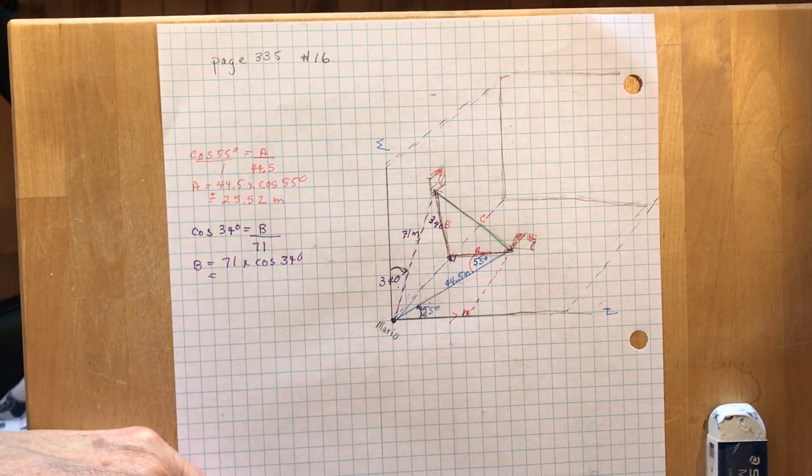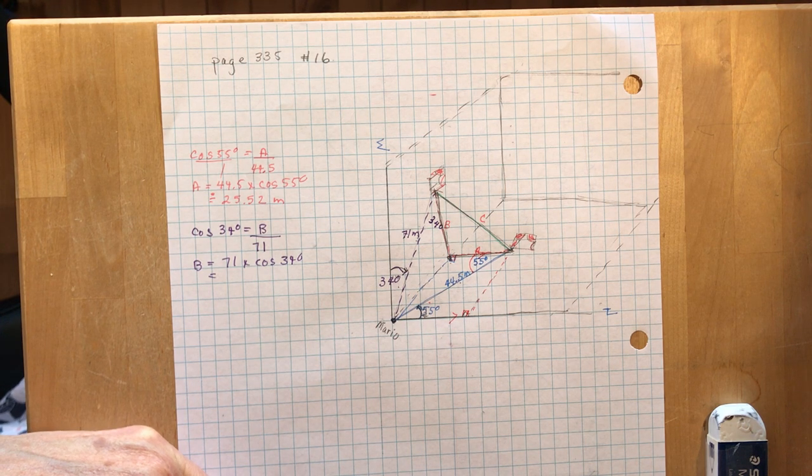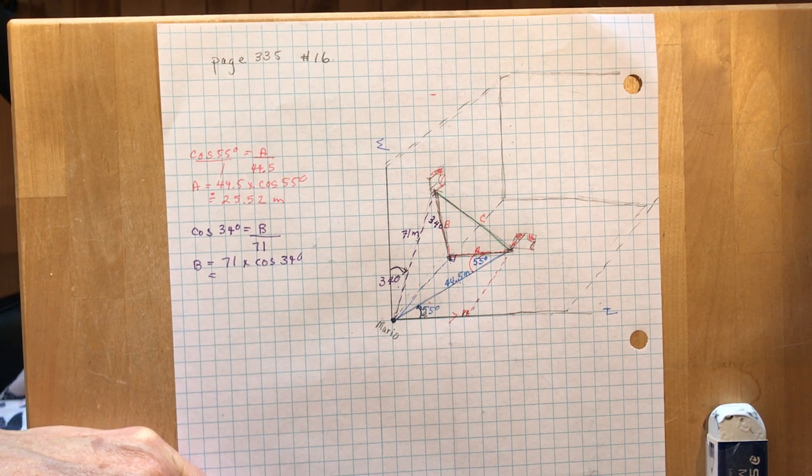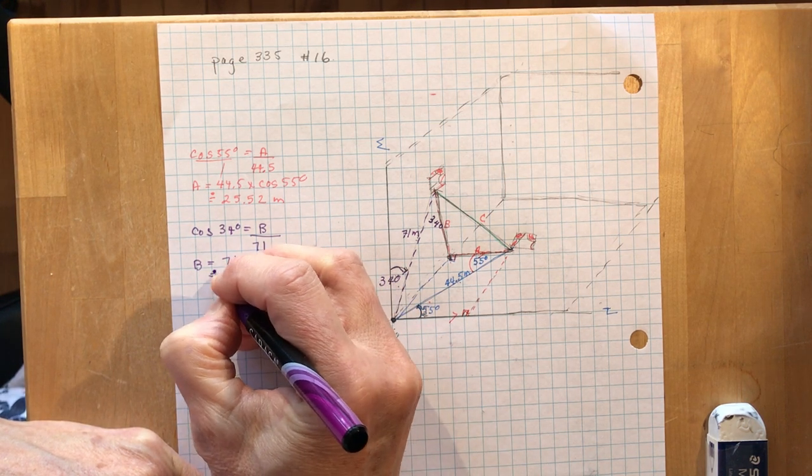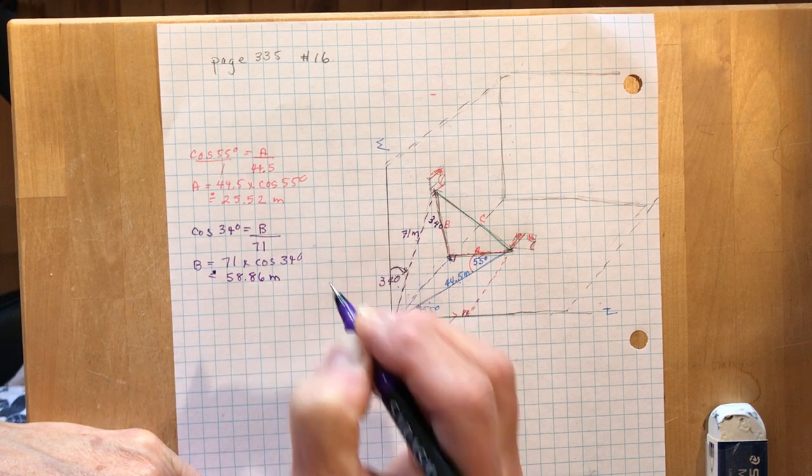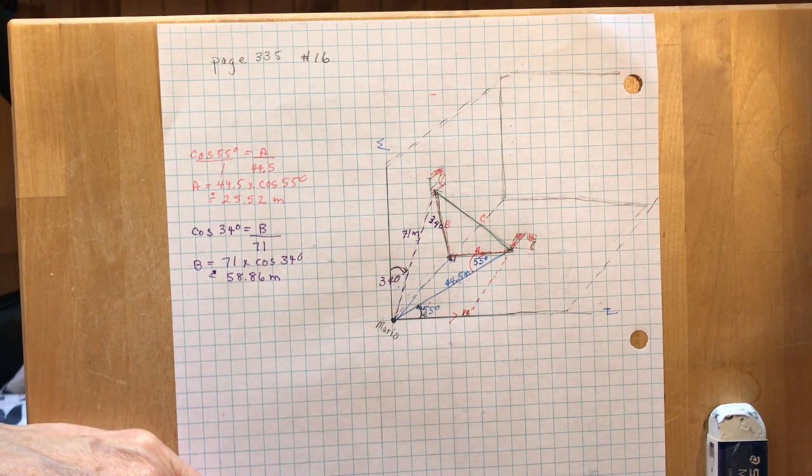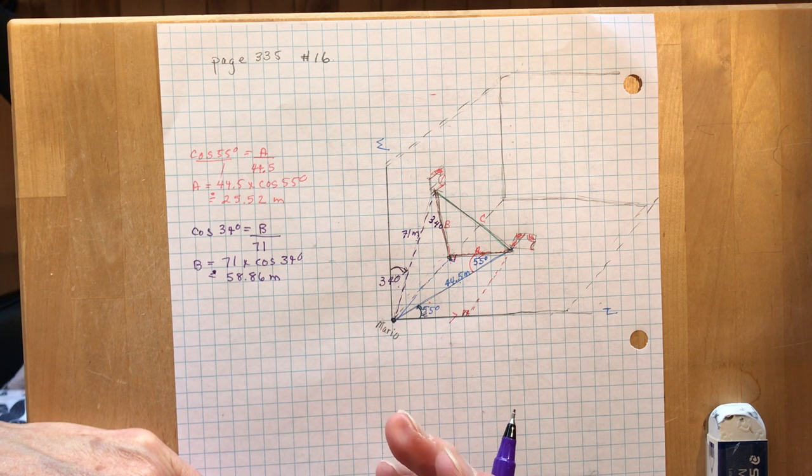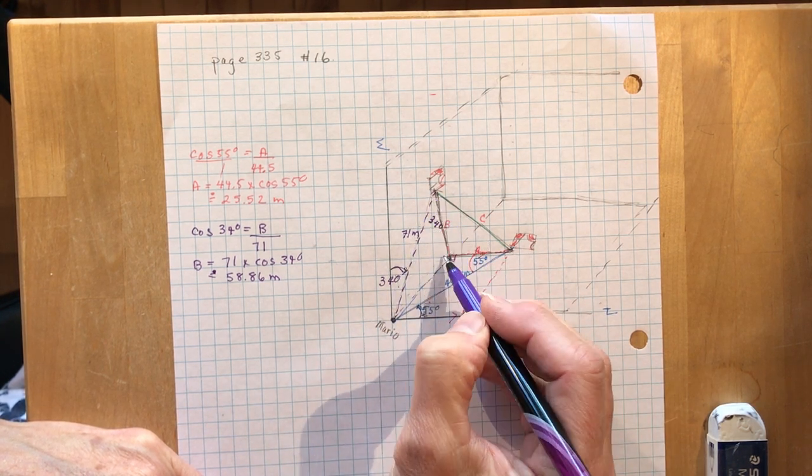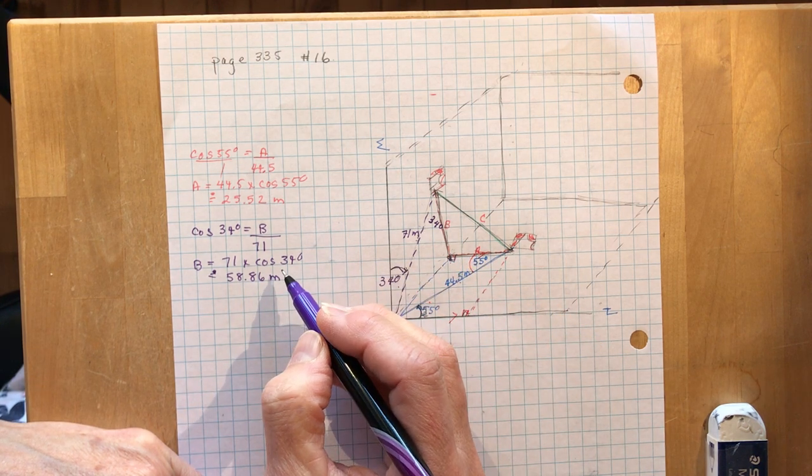So 71 times the cos of 34 is going to give me about 58.86, 58.86 meters. Okay, so that means the total distance from here to here on the outside of the building, I'm just going to add those two things together.